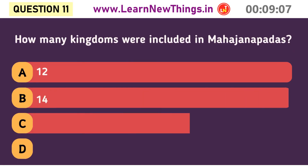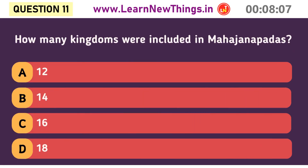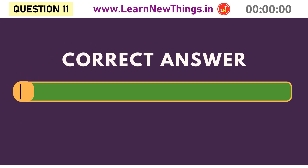How many kingdoms were included in Mahajanapadas? 16.